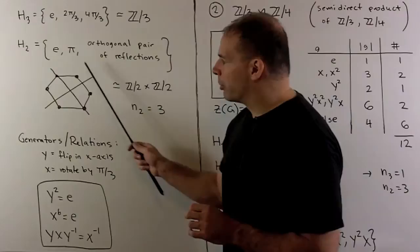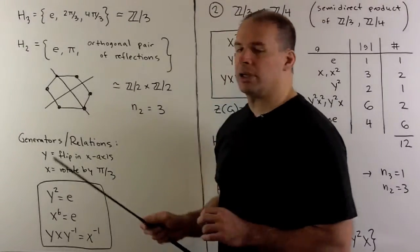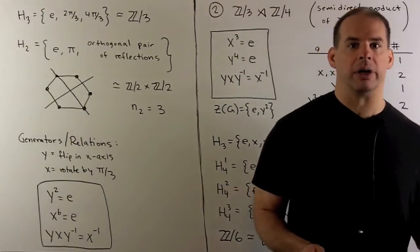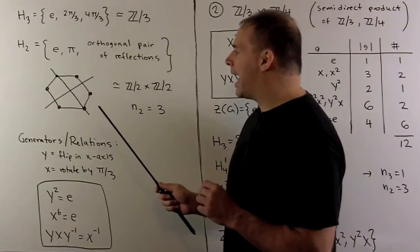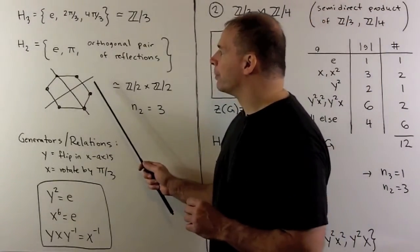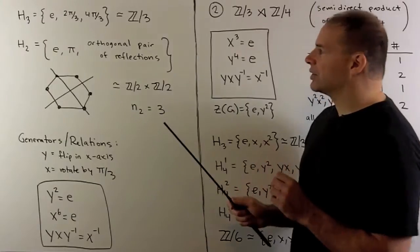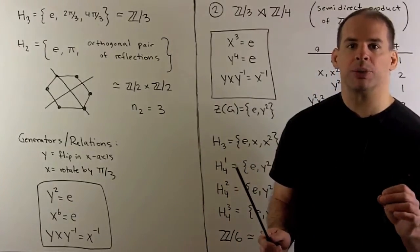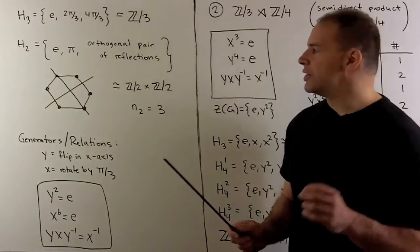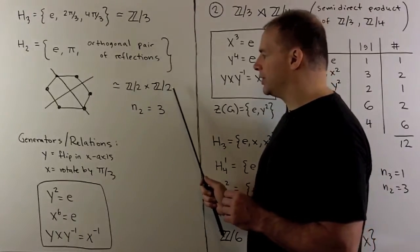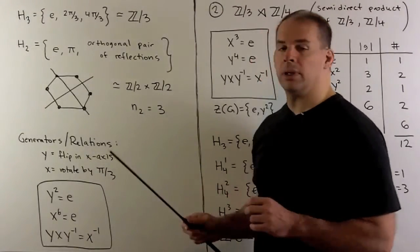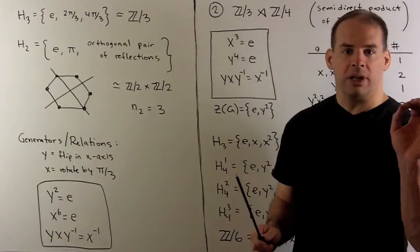If we take a product of two such reflections, we get rotation by 180 degrees. So we're going to have three such pairs. That gives us three Sylow 2 subgroups, and they're all isomorphic to Z2 cross Z2.